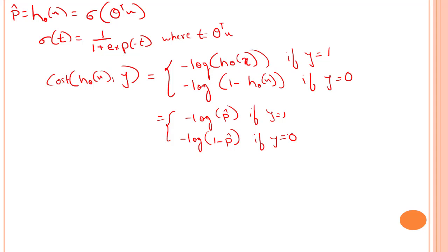This cost function really makes sense because minus log(p) grows very large when p approaches 0.